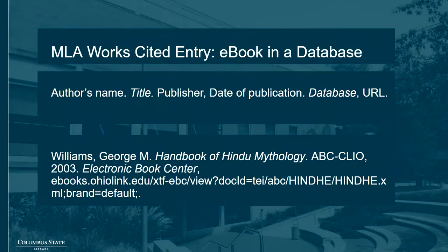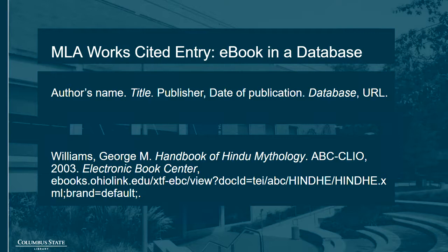Finally, let's take a look at e-books and databases. These are cited similarly to print books, but also include the name of the database and the URL. For a full citation, begin with the author's name followed by a period, then give the title of the book also followed by a period. Follow with the publisher and date of publication, separated by a comma and followed by a period — this is just like citing a print book. However, you then need to follow it with the name of the database where the e-book is located in italics, followed by a comma, then the URL of the e-book.